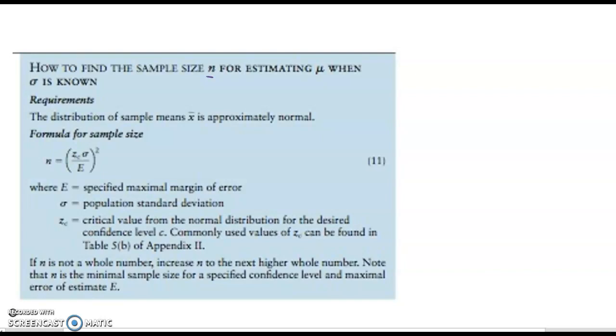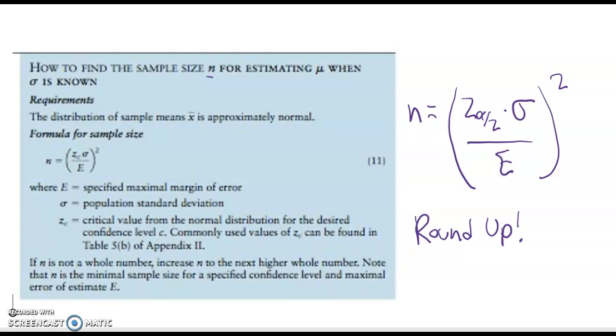Another skill we want to be able to do is to find the sample size n for estimating mu when sigma is known. And in this case we're going to take our critical value multiply it by sigma and divide by error and then square the whole thing. And like before we're always going to round up even if that decimal place part is less than 0.5.